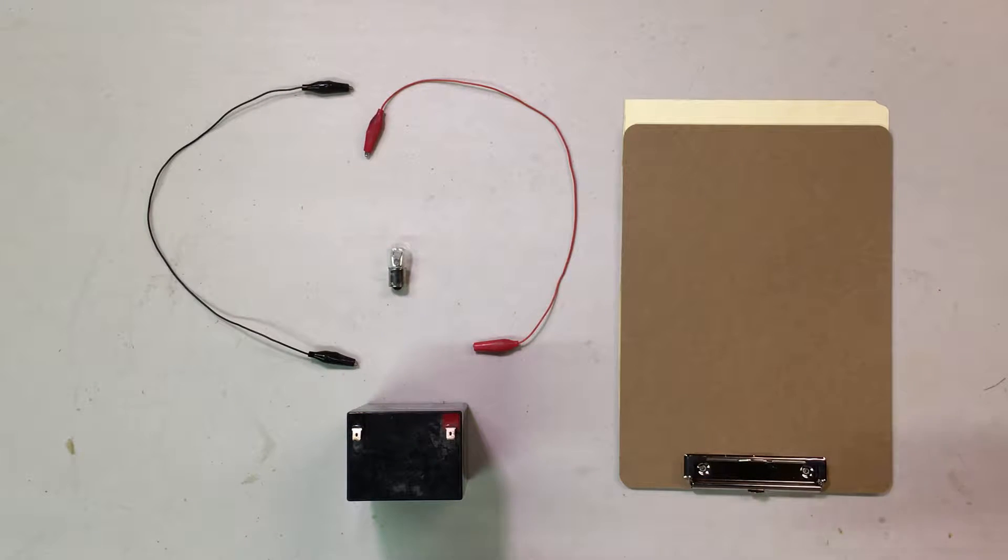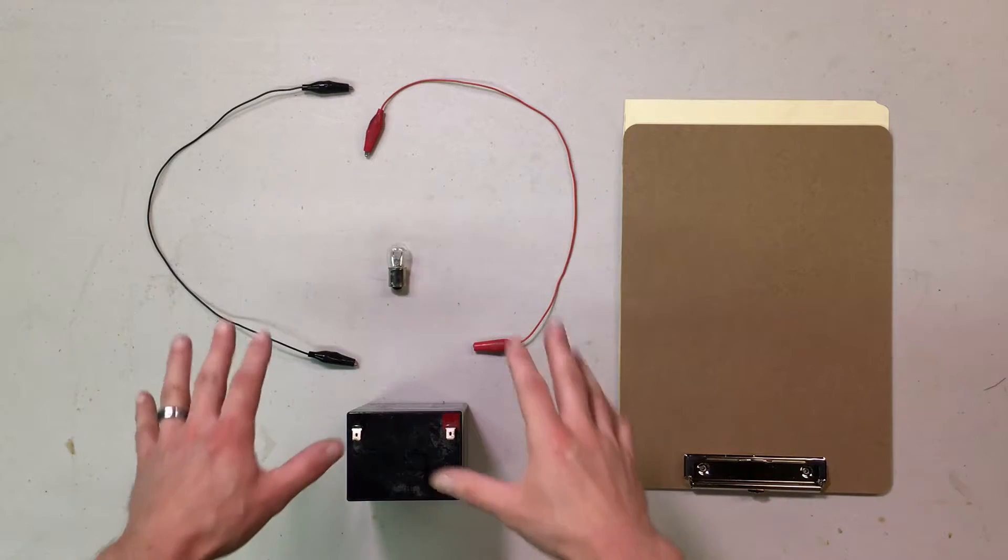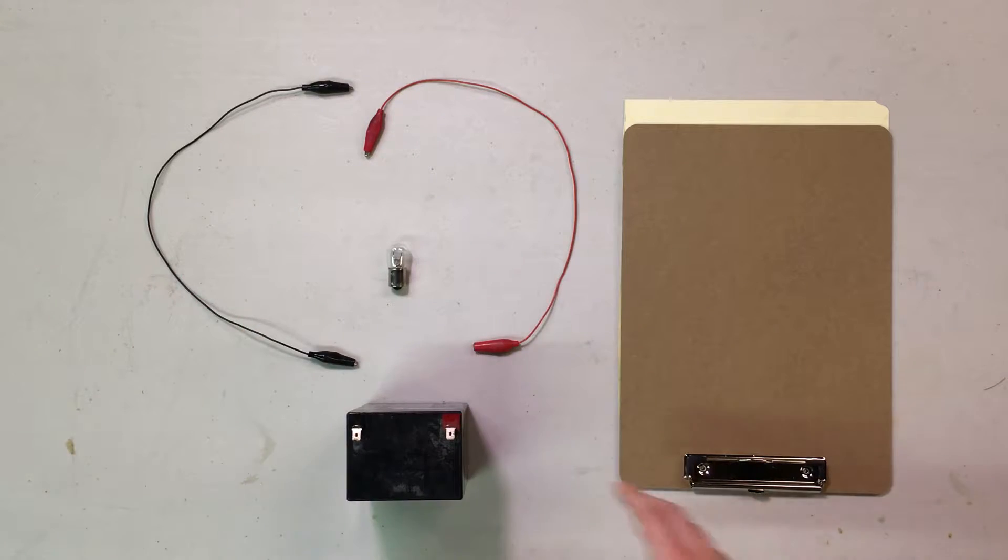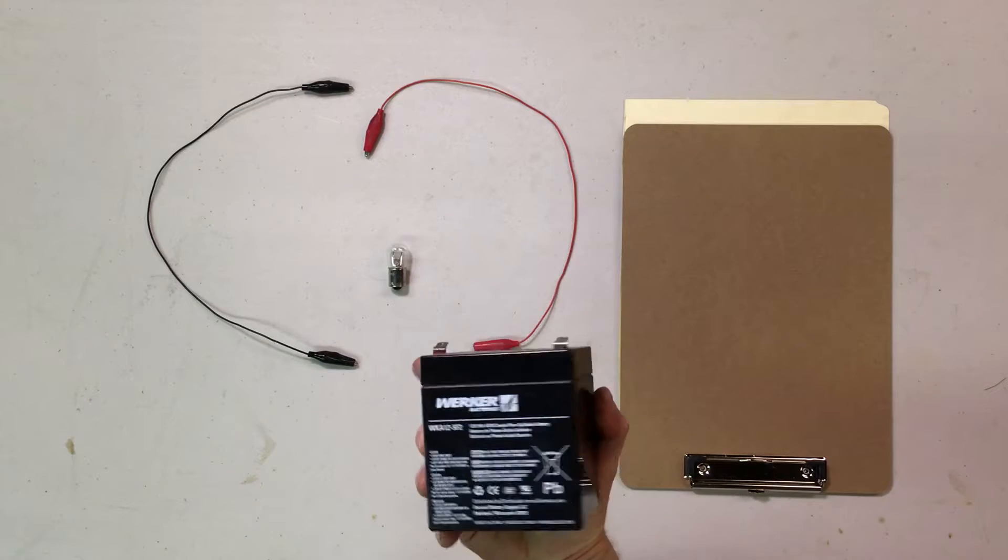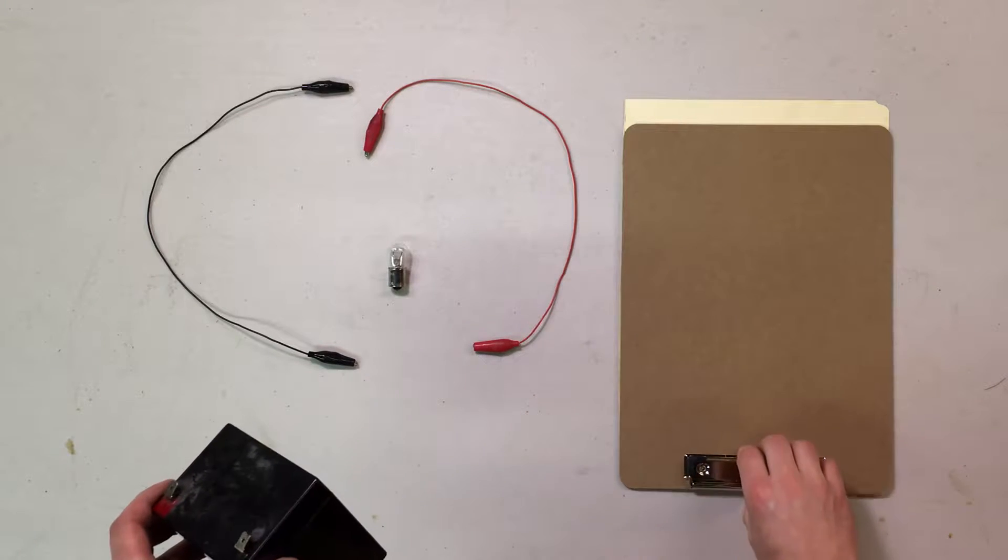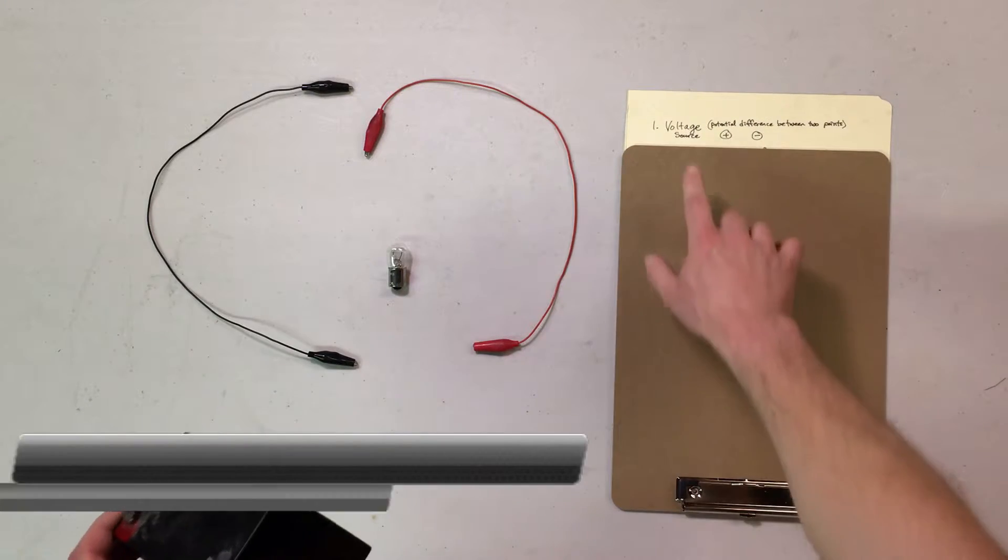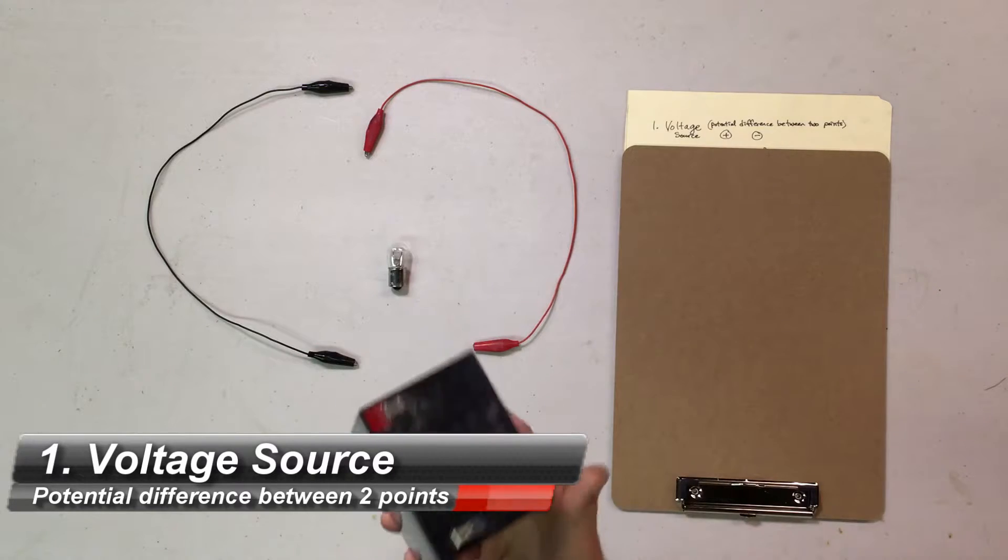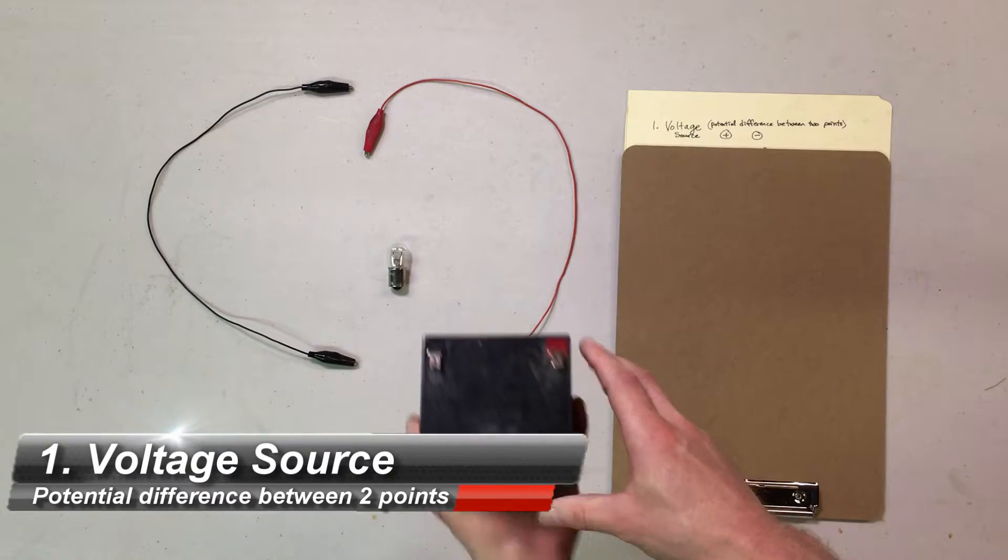So the basic components we have I'm going to demonstrate with just these few parts here. This is a battery, which is a power source, which is the first item on our list. You need a voltage source, which all it is is basically a potential difference between two points.